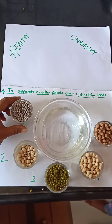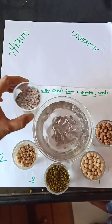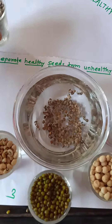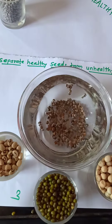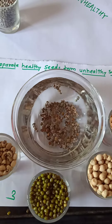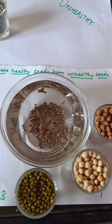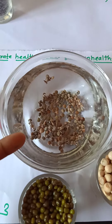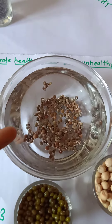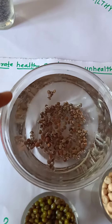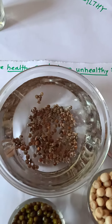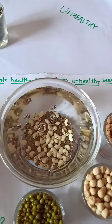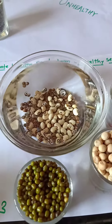You can see that a few seeds are floating and a few seeds have gone deep into the bowl. The seeds which are floating are called unhealthy seeds, and those which have settled down are healthy seeds.